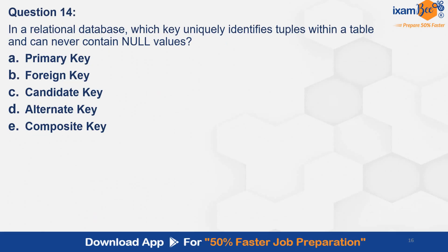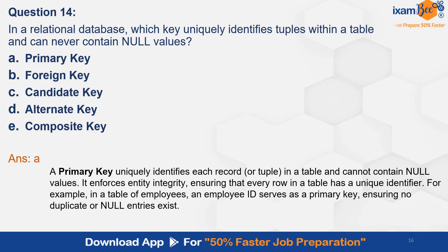Question 14. In a relational database, which key uniquely identifies a tuple within a table and can never contain null values? Option A. Primary key. B. Foreign key. C. Candidate key. D. Alternate key. E. Composite key. And the correct answer is A — primary key. A primary key uniquely identifies each record in a table and cannot contain null values. It enforces entity integrity, ensuring that every row in a table has a unique identifier. For example, in a table of employees, an employee ID serves as a primary key ensuring no duplicate or null entries exist.